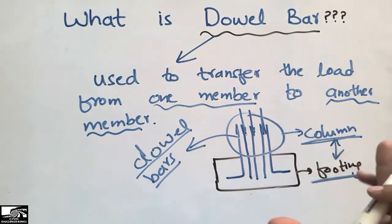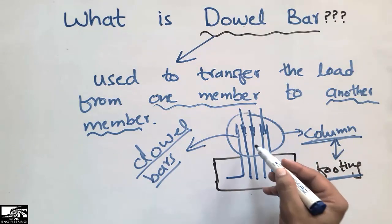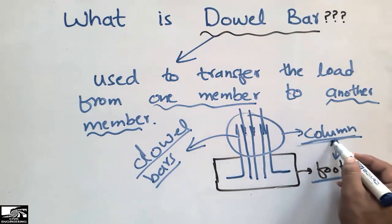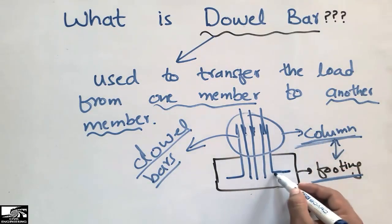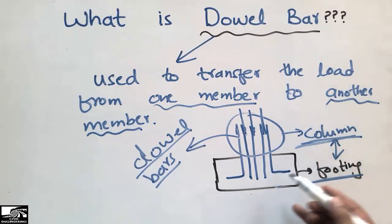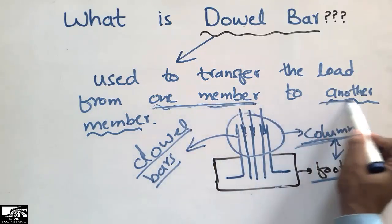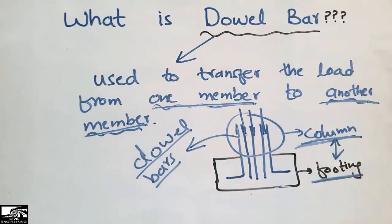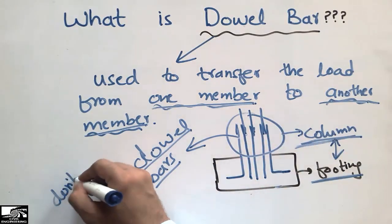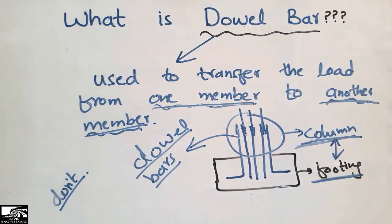But the dowel bar has a special definition: it always transfers the load from one member, such as the column, to another member, which may be the footing, beam, or slab. It is defined to transfer the load from one member to another member. Hope you understand what I'm trying to say. Don't forget to subscribe to our channel for more videos. Thank you for watching.